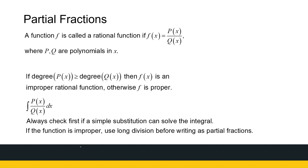We're looking at rational functions — a polynomial divided by a polynomial. If the numerator's degree is larger than the denominator's, then it's an improper rational function, so we must first check whether it's proper or improper. There are two things to do when faced with the integral of a rational function: first, check if a simple substitution can simplify or solve the integral — you don't want to go for a complicated explanation when a simple one will do. And if this is an improper function, you have to use long division before writing it as partial fractions.